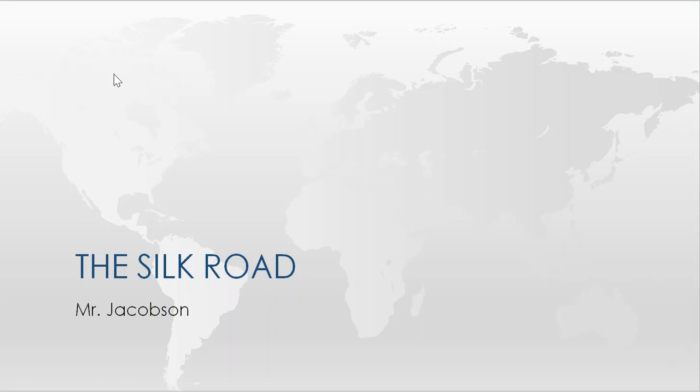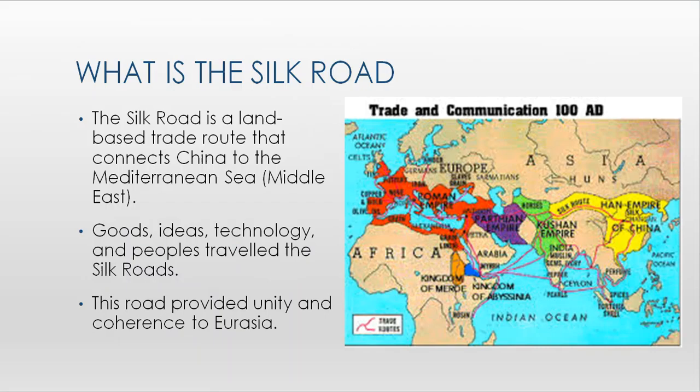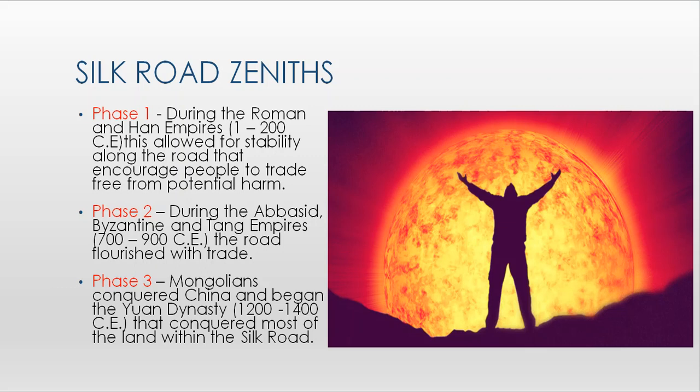Hello, students, this is your favorite teacher Mr. Jacobson. Today we talk about the Silk Road — the ins and outs, the different phases, and the devastating diseases that came about as a result of trading on the Silk Road. The Silk Road is a land-based trade route that connects China to the Mediterranean Sea. Goods, ideas, technologies, and peoples traveled the Silk Road, providing unity and coherence to Eurasia.